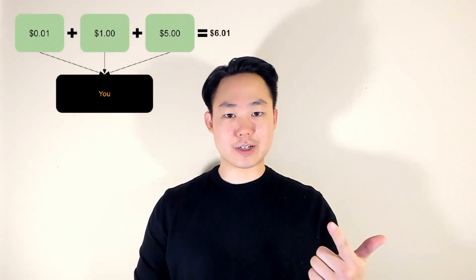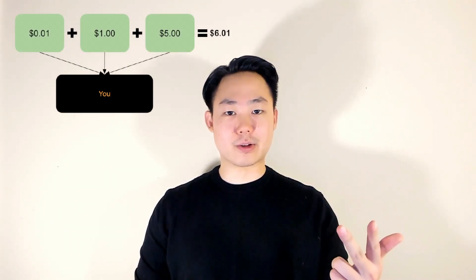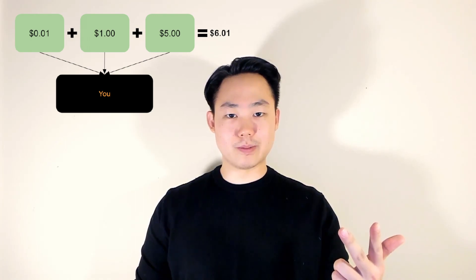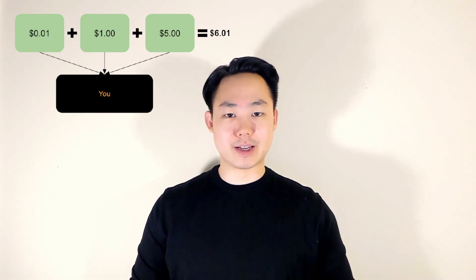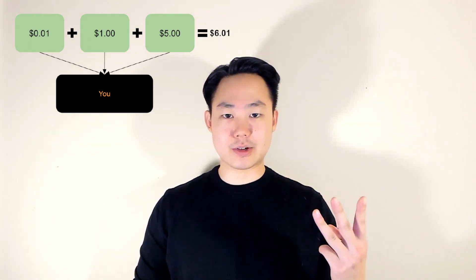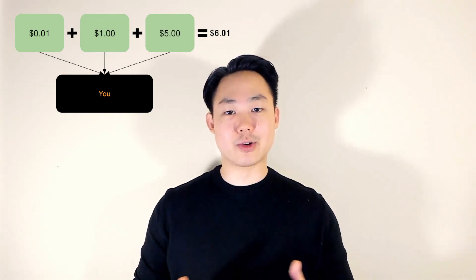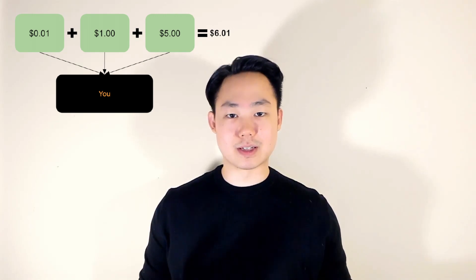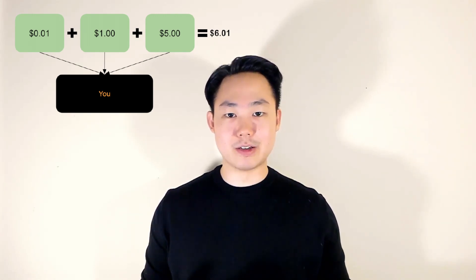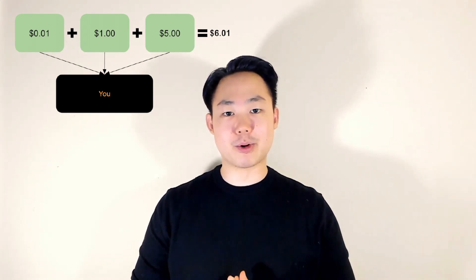To fully grasp how UTXOs work within Bitcoin, let's use cash as an example. Let's say you have a penny, a dollar, and a five dollar bill in your wallet. They represent three distinct units of currency, and you know your total balance of six dollars and a penny by adding them all together.